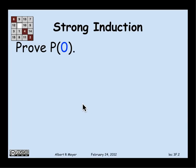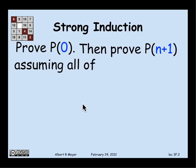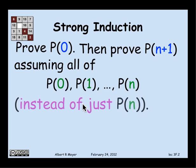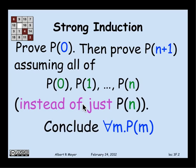But now, in order to prove P of n plus 1 in the inductive step, assuming P of n with ordinary induction, with strong induction you can assume not just P of n, but you can assume P of 0, P of 1, all of the properties, that all the numbers up through n have the property. And from this, of course, you could conclude that everything has the property, that for all n, P of n.